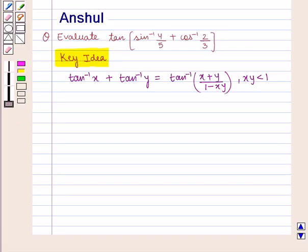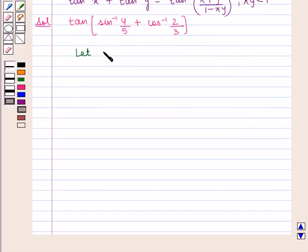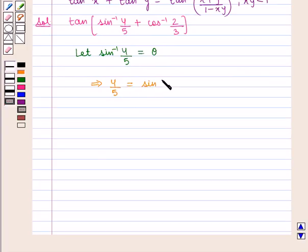We are given the expression tan of sin inverse of 4 by 5 plus cos inverse of 2 by 3. We shall convert sin inverse of 4 by 5 and cos inverse of 2 by 3 in terms of tan inverse function. First, let us assume sin inverse of 4 by 5 be theta, which implies that sin theta is equal to 4 by 5.